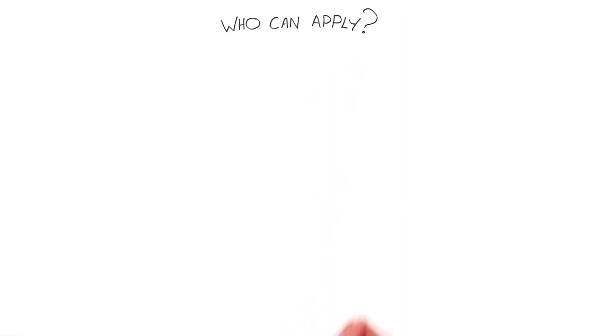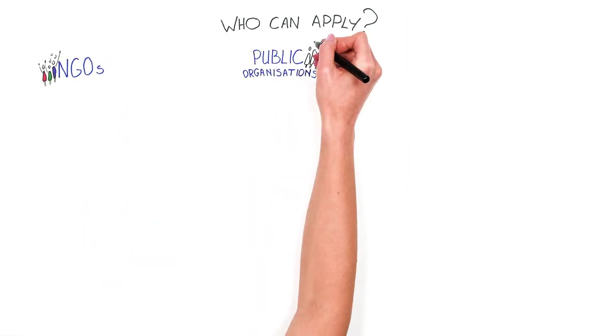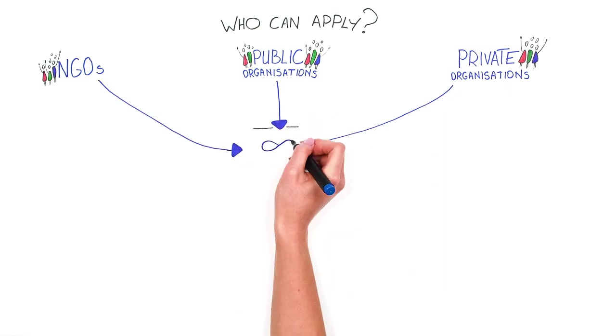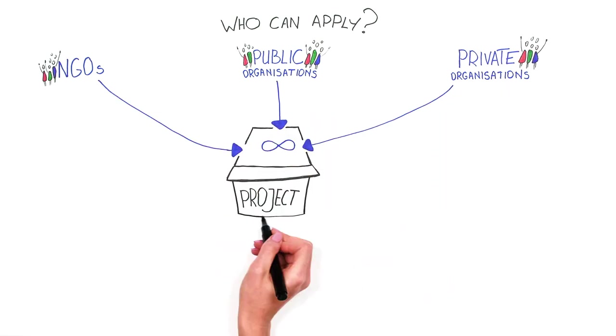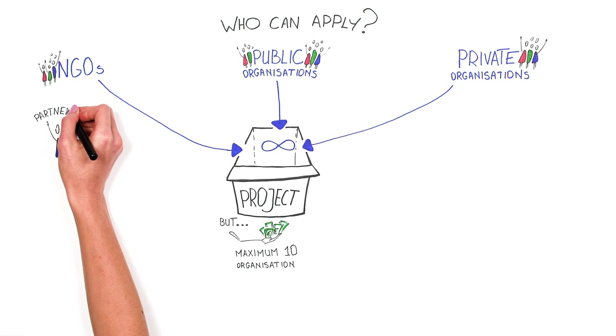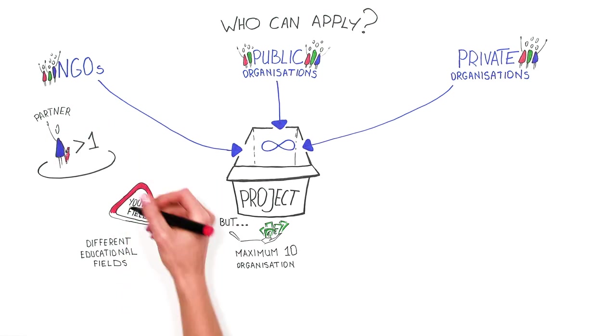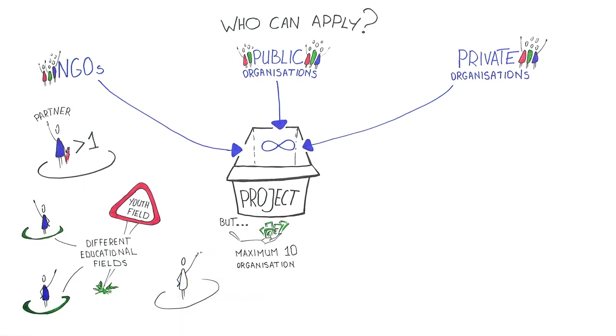Applications in the youth field can be submitted by NGOs or any other type of public or private organizations working with young people. They can include any number of organizations, but funding is provided to a maximum of 10 partners. Moreover, it is possible to have more than one partner per country involved. Partnerships can also be a combination of partners from different educational fields, but the main impact has to be on the youth field.